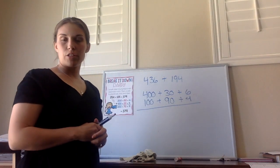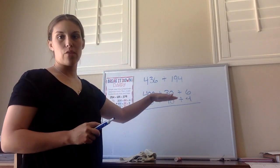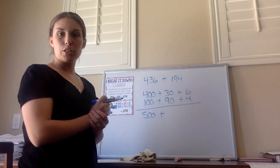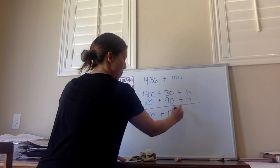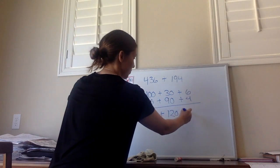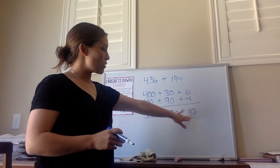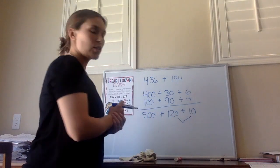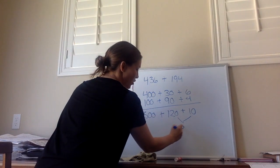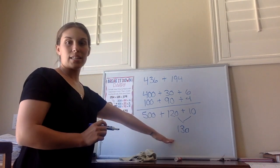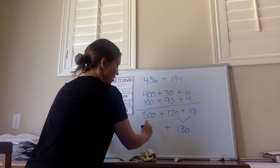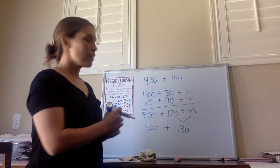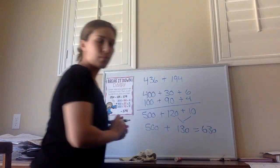Once I've broken up each number into expanded form, I need to add the hundreds, the tens, and the ones. So 400 plus 100 is 500. 90 plus 30 is 120. And 6 plus 4 is 10. So I see I have a 10 in the ones place, so I'm going to take the ones and the tens and add them together. 120 plus 10 equals 130. Now I need to bring down the 500 and add that value. So 500 plus 130 equals 630.